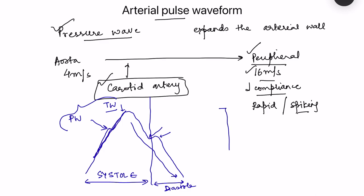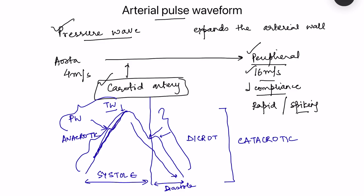The entire normal pulse waveform is known as the catacrotic pulse. It has two limbs: the anacrotic limb (the rising phase) and the dichrotic limb (the falling phase). The falling phase begins with the late ejection phase and ends at diastole with aortic valve closure, which coincides with the second heart sound. The small upward deflection at that point is known as the dichrotic notch.